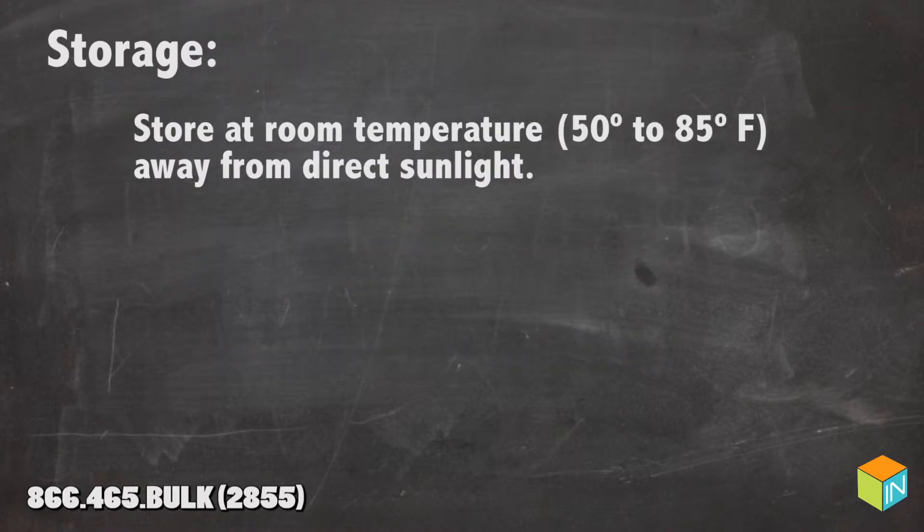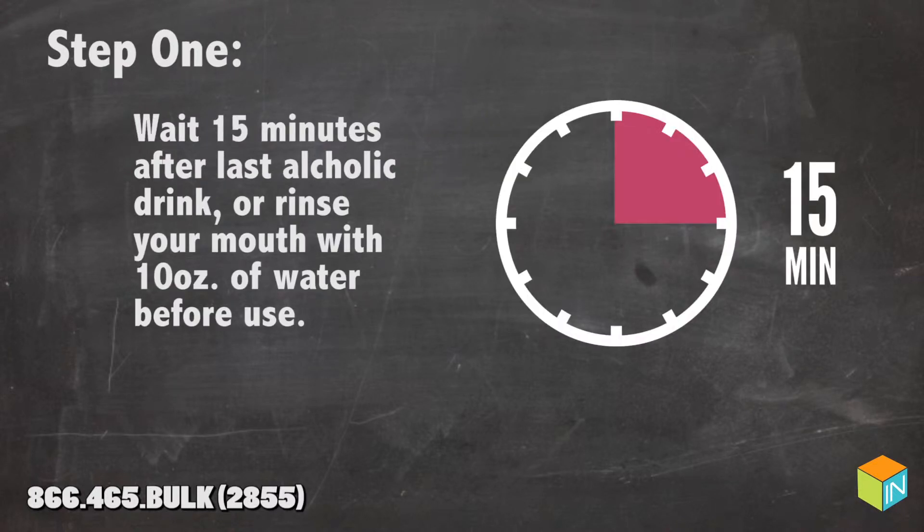When storing the AlcoCheck Breath Alcohol Screen, you should always leave it at room temperature, about 50 to 85 degrees Fahrenheit, away from direct sunlight.